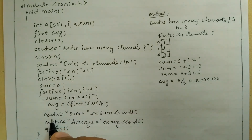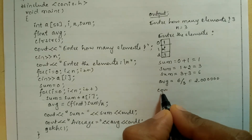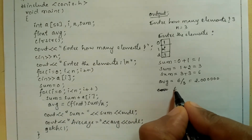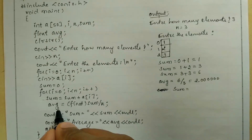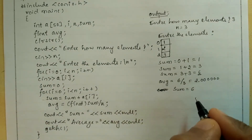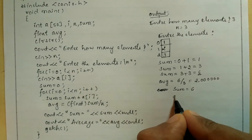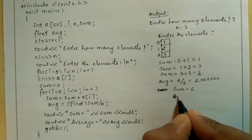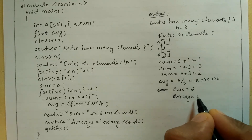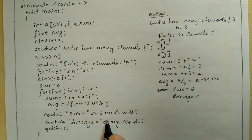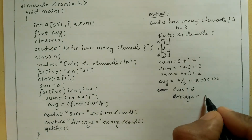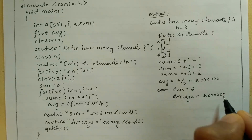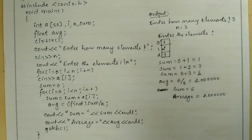Now we are going to print sum and average. Cout prints whatever you put in double quotation marks as-is — 'sum is equal to' — then the value stored in sum, which is 6. So it prints: sum is equal to 6. Next, average is equal to — in double quotation marks — then avg which holds 2.000000. So it prints: average is equal to 2.000000.